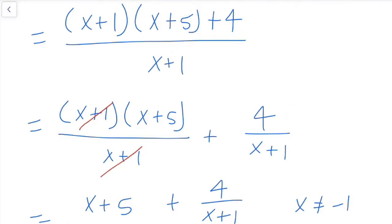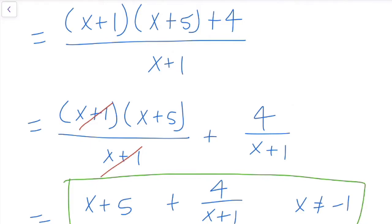Keep in mind this process is exactly the same as long division — this is literally what you're doing with long division. But some people really like to factor, so this process may make more sense for them. This is just another tool in your tool belt in addition to synthetic division and long division. It also helps us see what's mathematically happening when we split it up, since sometimes we get lost in the algorithm of long division. So x plus 5 plus 4 over x plus 1 is our simplified final answer using forced factorization.